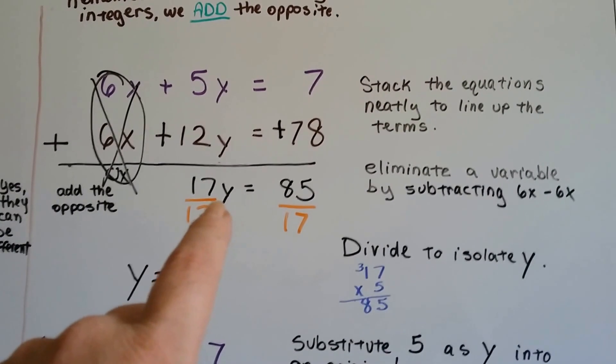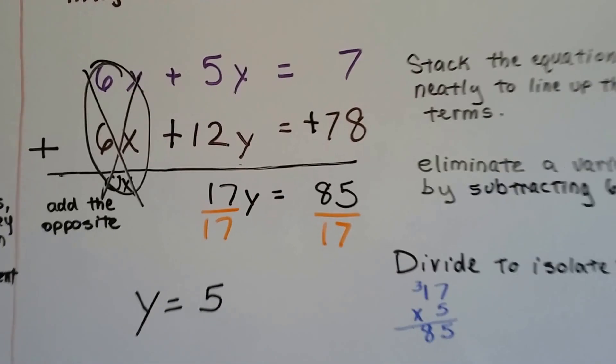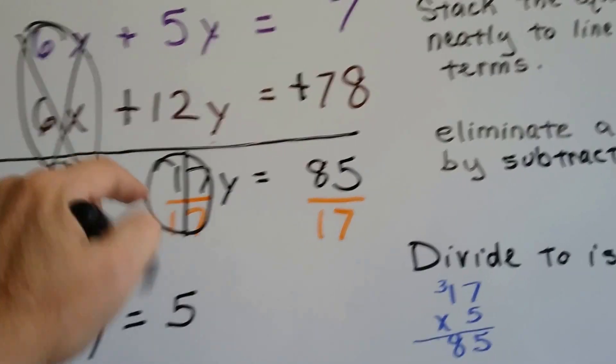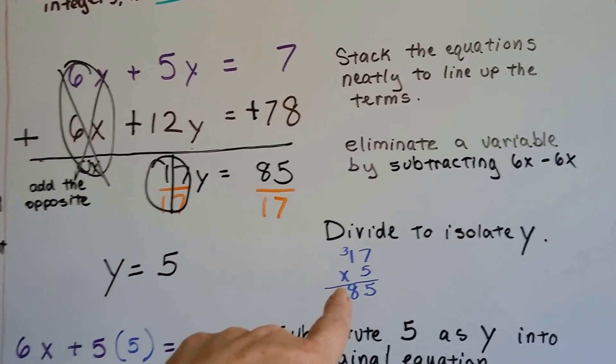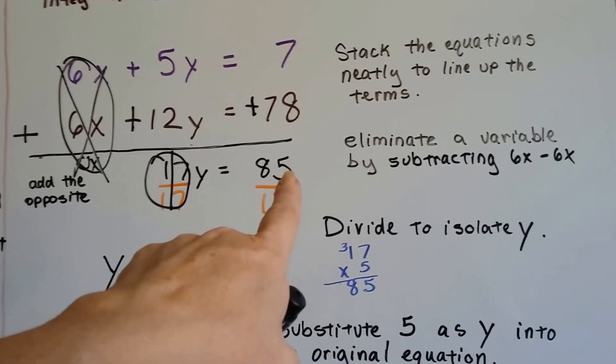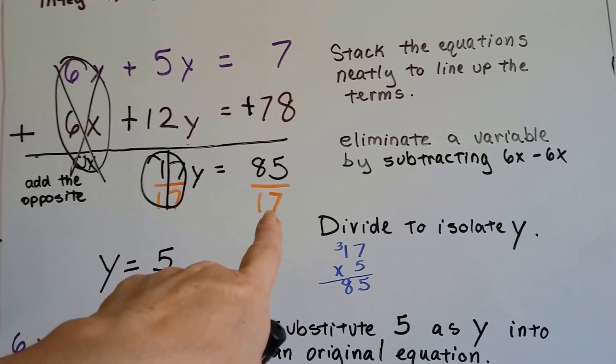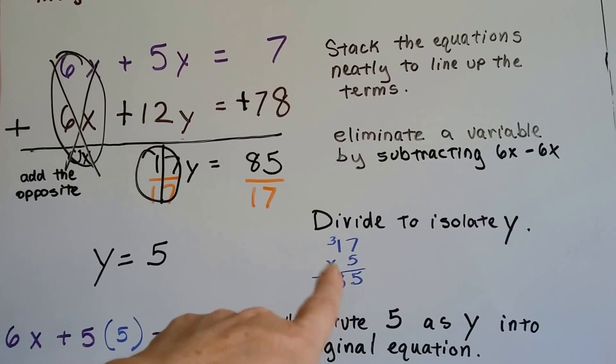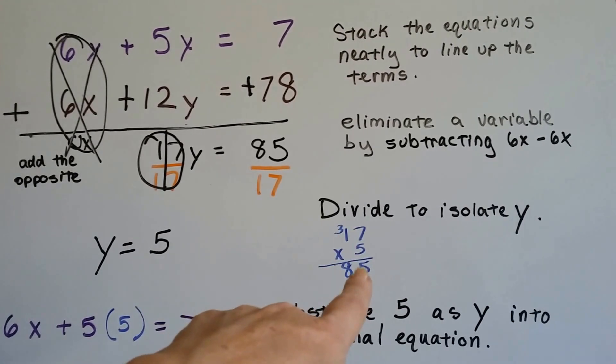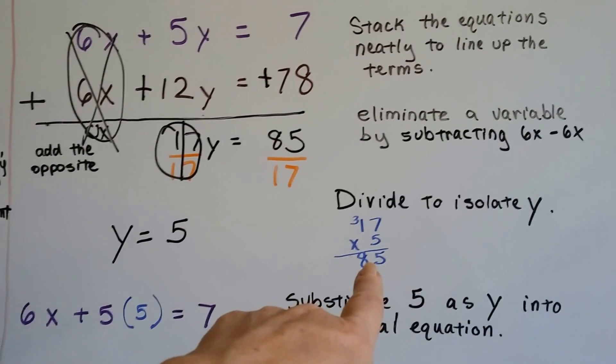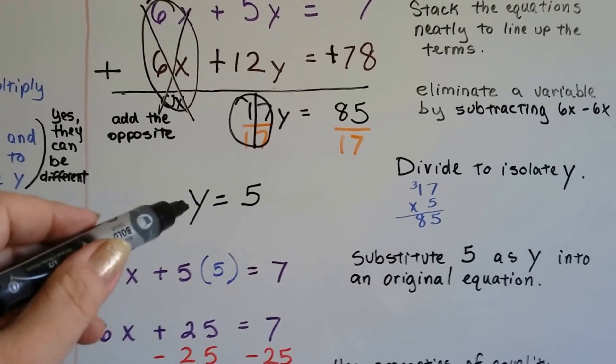So now we've got 17y equals 85. We know that we can divide each side by 17 to isolate that y. So that makes it our friend the invisible 1. So we've got 1y. And instead of dividing, I made it easy on myself. And I actually did quick multiplication. And I thought, well, it's got to end in a 5, so it's going to be an odd number to multiply it by. If I multiply this 17 times a 4, I want to make sure I get a 5 in this spot. And I knew 7 times 5 would have a 5 because it's 35. So that gave me the 85 I needed. So I got lucky and thought about it and did it real quick and did quick multiplication. So now we've got y equals 5.